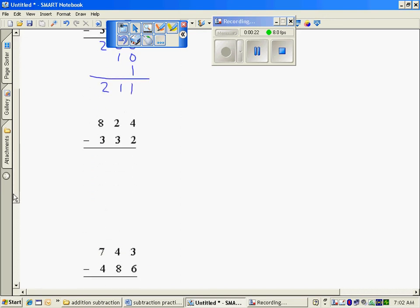800 minus 300 is 500. 20 minus 30, I can't take 30 from 20, so I need to go in the hole. If I had $20 and I spent 30, I would be in the hole 10.